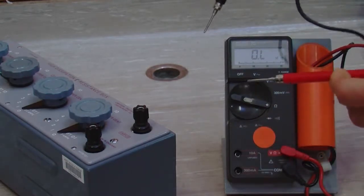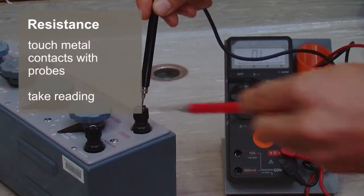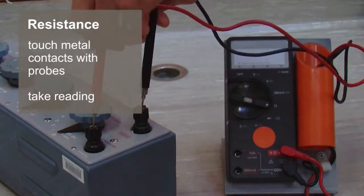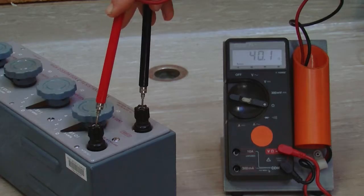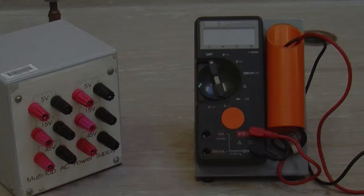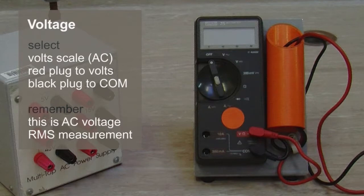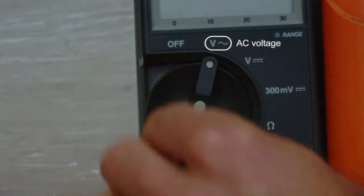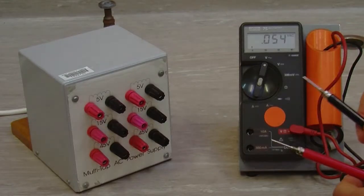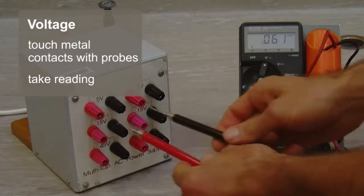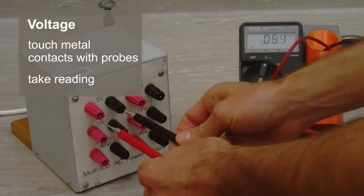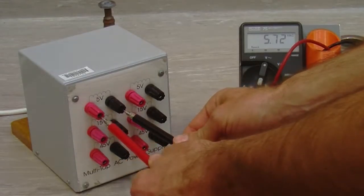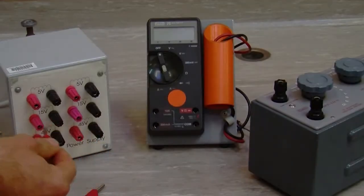And then we touch our probes into the metal contacts to get a sine wave beside it, and then take our two probes and touch them into the metal contacts that we're measuring.